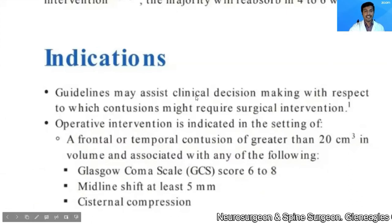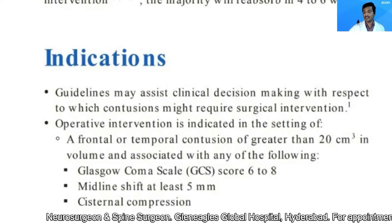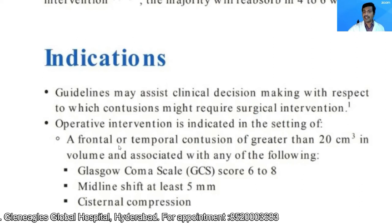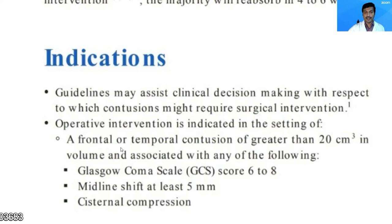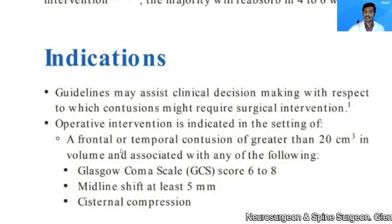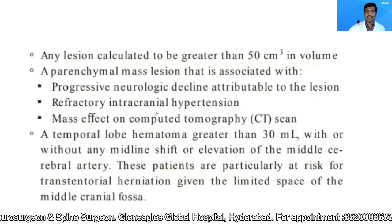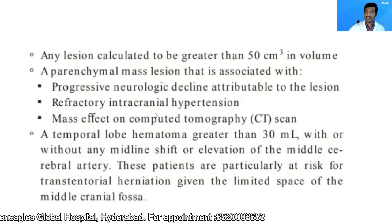The indications were discussed in the previous session, but briefly: a frontal or temporal contusion greater than 20 cc in volume associated with a Glasgow Coma Scale of less than 8, a midline shift of at least 5 mm, cisternal compression seen on CT scan of the brain, or any frontal lesion greater than 50 cc in volume.